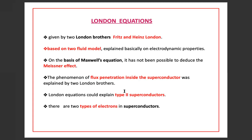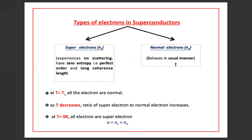According to the two-fluid model, there are two types of electrons in superconductors: normal electrons, which behave in the usual manner, and superelectrons, which experience no scattering, have zero entropy — that is perfect order — and long coherence length. At T equal to Tc, all the electrons are normal. As temperature decreases, the ratio of superelectrons to normal electrons increases. At T equal to 0 K, all electrons are superelectrons.